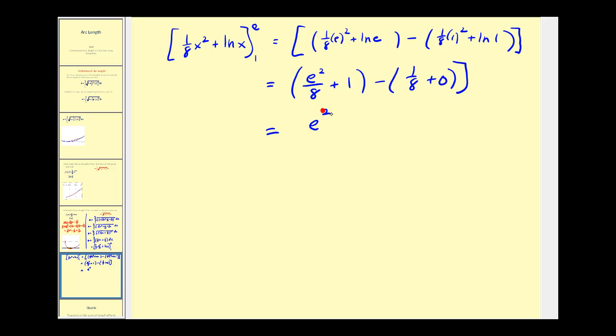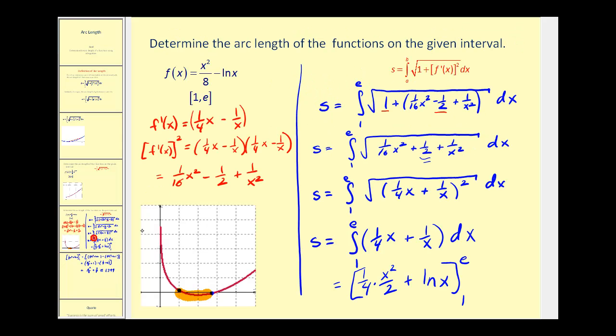Let's go ahead and combine the like terms. We have e squared divided by eight. One minus one-eighth would be plus seven-eighths. And this is approximately equal to one point seven nine nine. And again, this would be the arc length of this function from one to e.